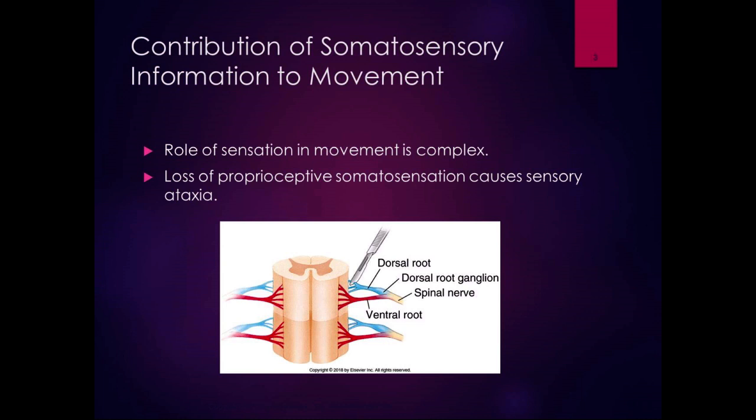The role of sensation in movement is complex. If you lose that proprioceptive somatosensation, you get sensory ataxia — the incoordination of movement — because you're not getting the proper input to tell you how to move accurately. There's a huge functional significance to that sensory information. When you have sensory ataxia, the brain is not getting the messages from the body about where you are in space and what needs to be corrected — that's why you have incoordination of movements.